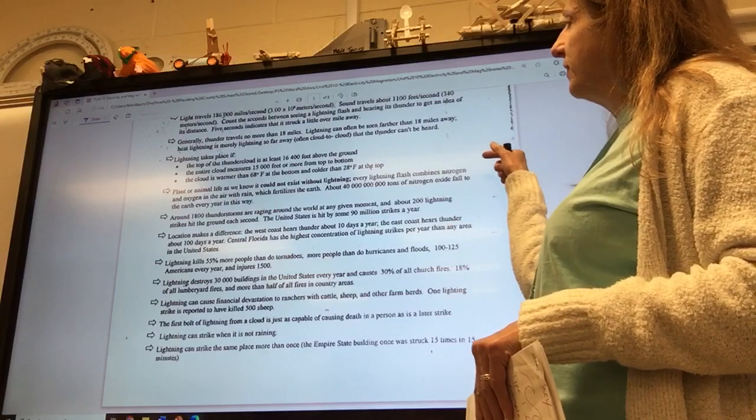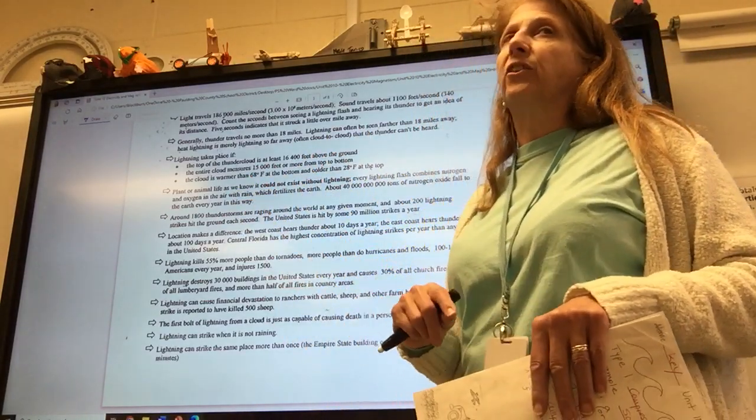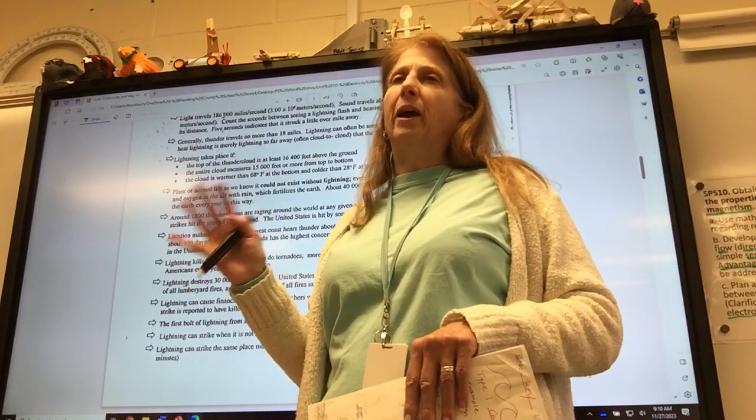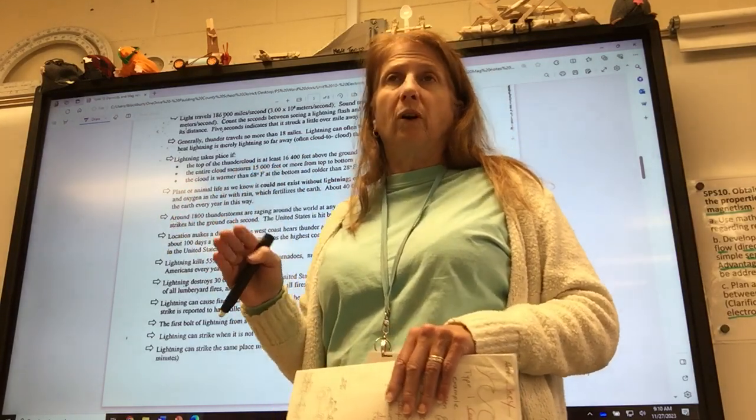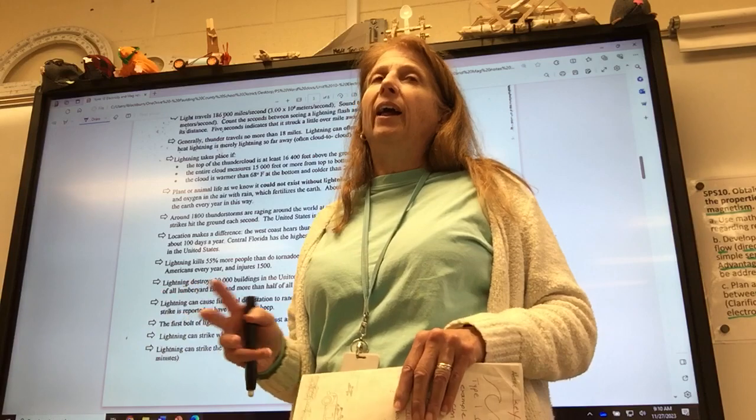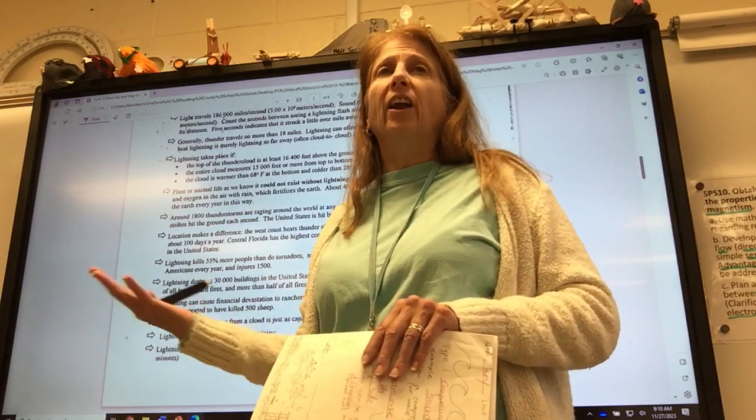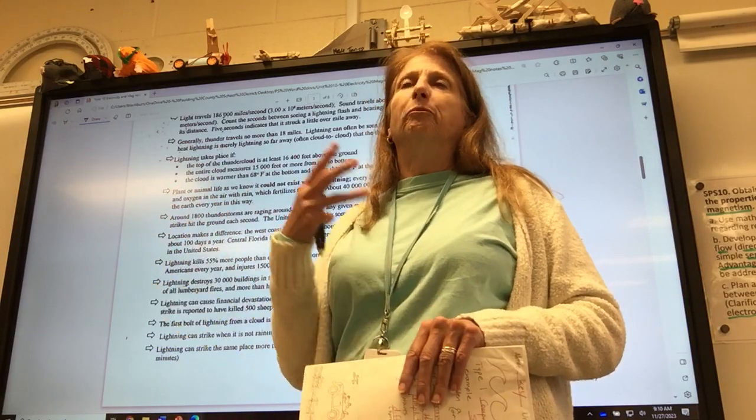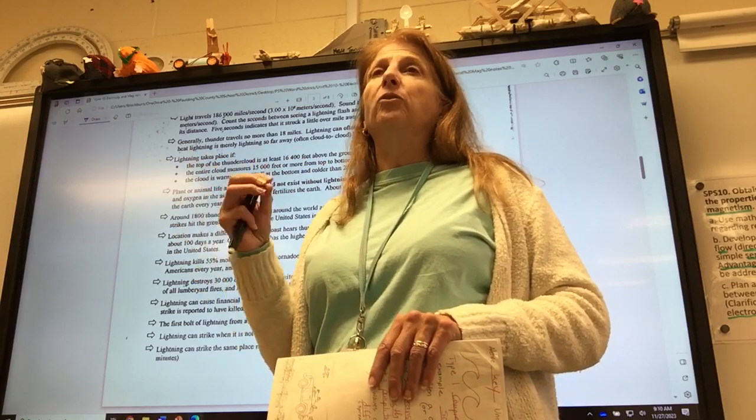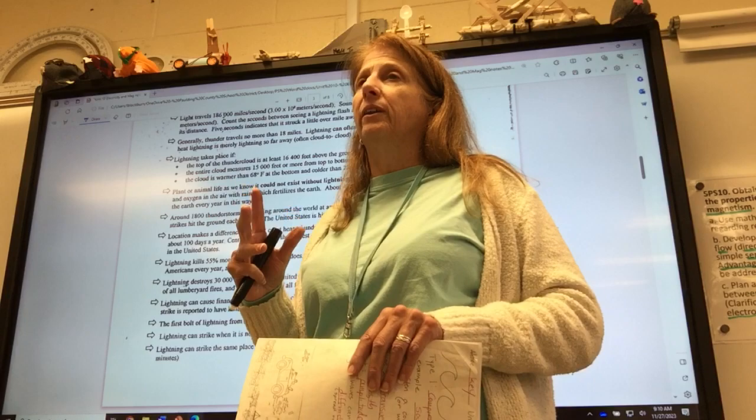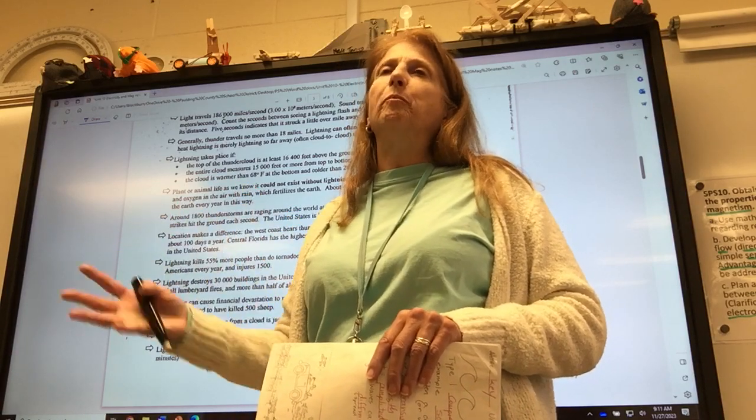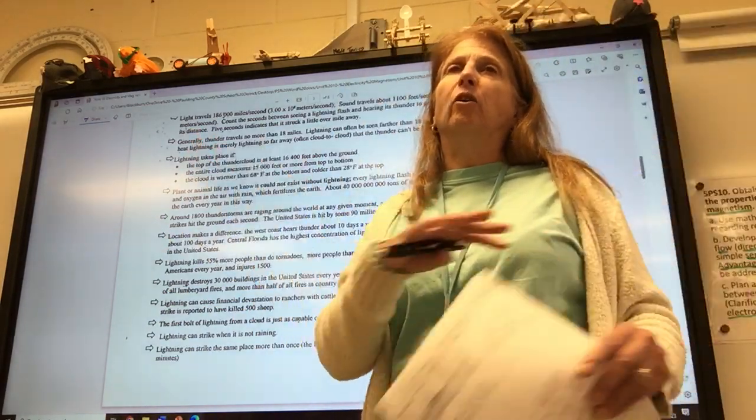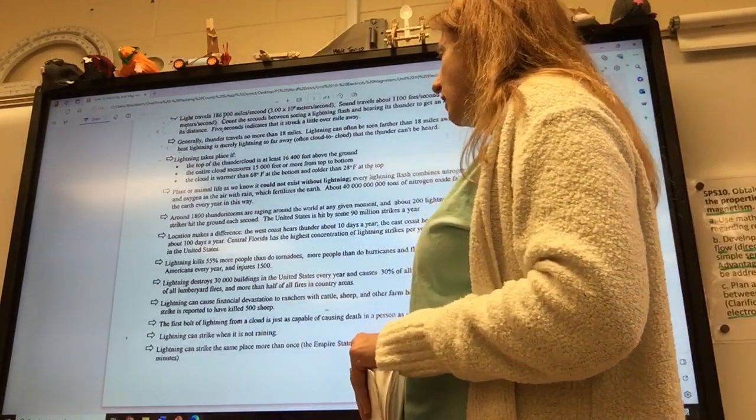It can go 186,000 miles per second, very fast. So sound only goes 1,100 feet per second, much slower. That's why you see the lightning, then hear the thunder, because the light travels fastest. Five seconds indicates it's a little over a mile away, and that's why you count. You see the lightning, and then you count to hear the thunder. About three to five seconds is a mile. That's how many miles away it is. Generally, thunder travels no more than 18 miles. Lightning can often be seen farther than 18 miles, so you'll just see the lightning and not hear it.